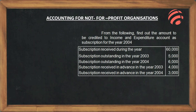From the following, find out the amount to credit to the Income and Expenditure account as subscription for the year 2004. Subscription received during the year: Rs. 60,000. Subscription outstanding in the year 2003: Rs. 5,000. Subscription outstanding in the year 2004: Rs. 6,000.